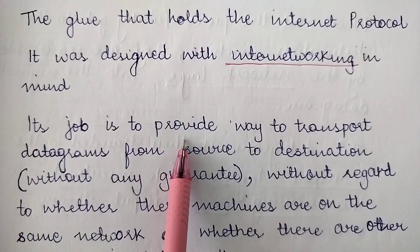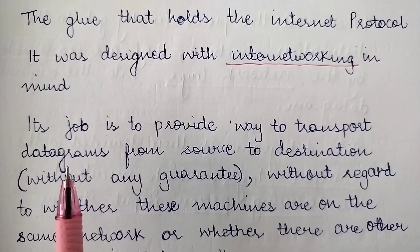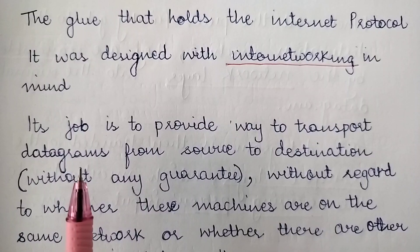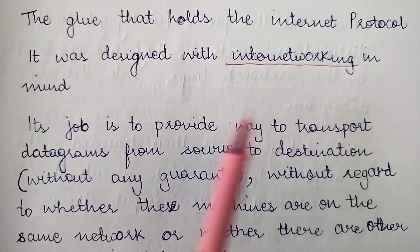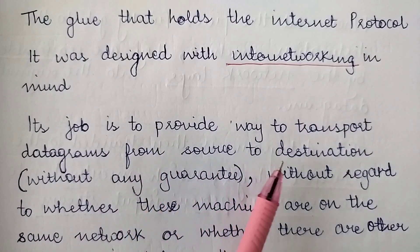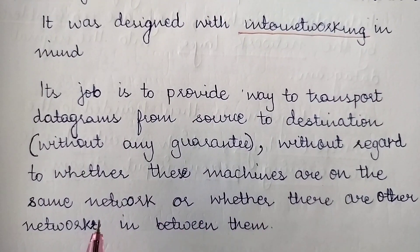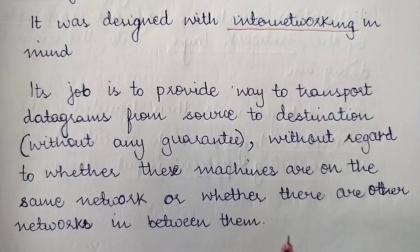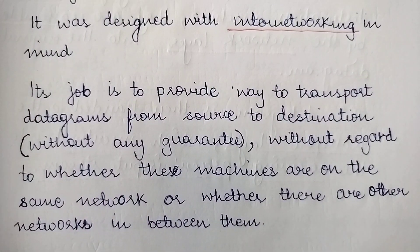The job of Internet Protocol or IP is to provide a way to transport datagrams. Datagrams are basically smaller units of data — before injecting data into the network, large chunks of data are divided into smaller units called datagrams. The job of IP is to transport these datagrams from source to destination without any guarantee. That is, they will be transmitted from source to destination but there is no acknowledgement, and without regard to whether the machines are on the same network or on other networks in between.